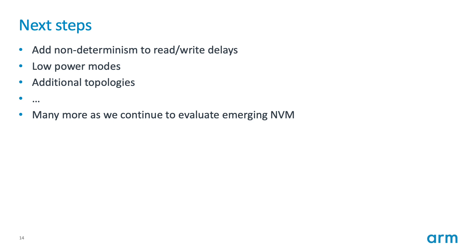For next steps, there are a few items: adding non-determinism to read and write delays, evaluating low-power modes and adding support for that within GEM5 for non-volatile memory, and looking at additional topologies. The main goal of these changes was to create an infrastructure where we could start adding new interfaces easily into the memory controller and use those to evaluate future memories and continue to evaluate emerging non-volatile memory. Thank you very much, and I hope to see you at the GEM5 workshop.